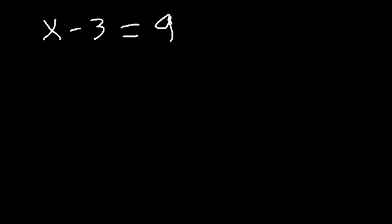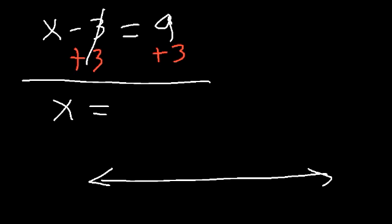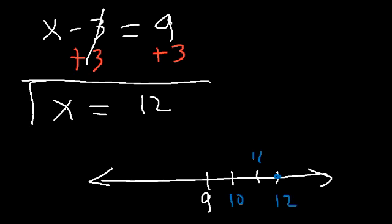Let's try this one: x minus 3 is equal to 9. We need to do the opposite of what we see. Since we see a negative 3 on the left side, let's add 3 to both sides. Negative 3 plus 3 is 0, so those two numbers will cancel. For 9 plus 3, if you put 9 on the number line and travel 3 units to the right, 9 plus 3 is 12. Therefore x is equal to 12.